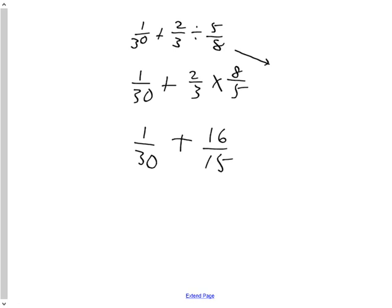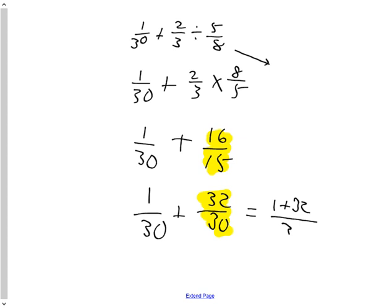Now, I'm not going to change 16 over 15 to a mixed fraction. That would be silly. Because what I am going to do, though, is because I'm adding, I require what? I need a common denominator. And 30 happens to be a beautiful one that can be made into both 1 over 30 and 16 over 15. 1 over 30 stays 1 over 30. 16 over 15 becomes 32 thirtieths. So, those are equivalent fractions. We would have multiplied both numerator and denominator by 2 to create an equivalent fraction.